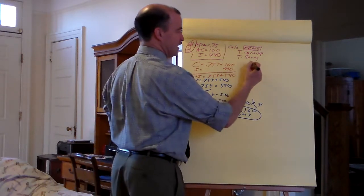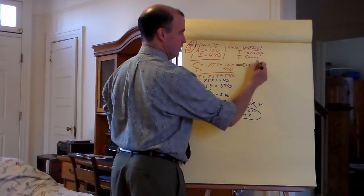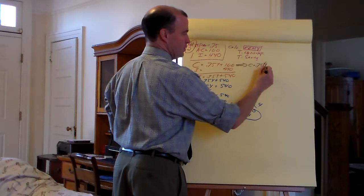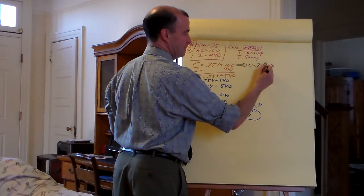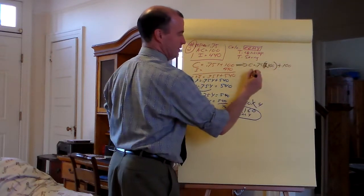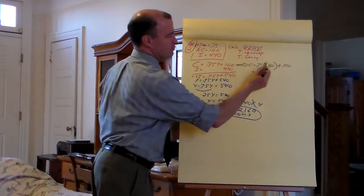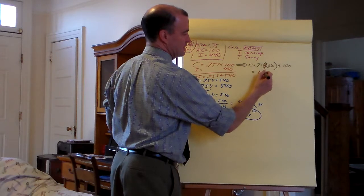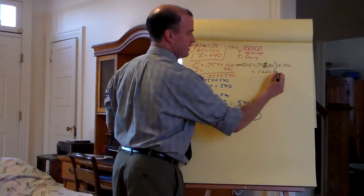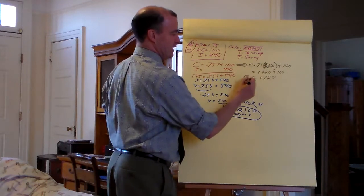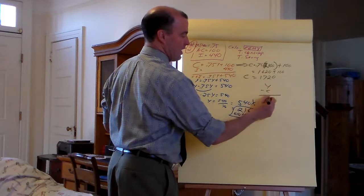Let's figure out total consumption. C equals 0.75Y. Let's write it in — 0.75 times 2160. Three quarters of 2,000 is 1,500; three quarters of 160 is 120. So that's 1,620. 20 plus 100 — I'm getting 1,720.